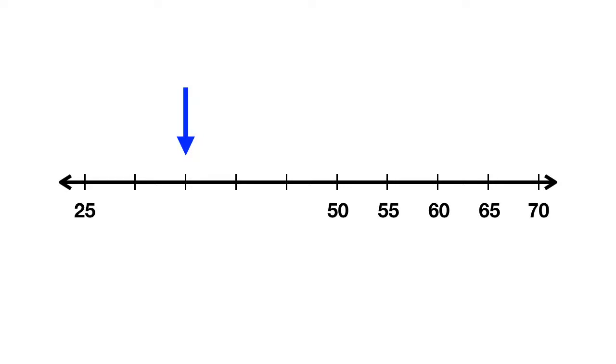On this number line, what happens when you move one dash to the right? You can see that when we move from 50 to 55, what's happening is we add 5. You can check again. When you move from 55 to 60, you're also adding 5. 60 to 65, adding 5.